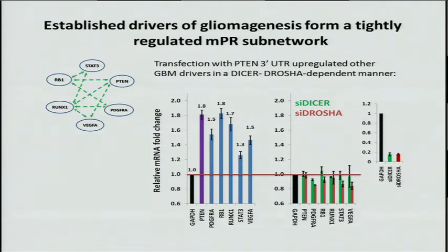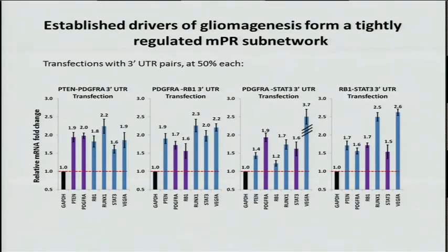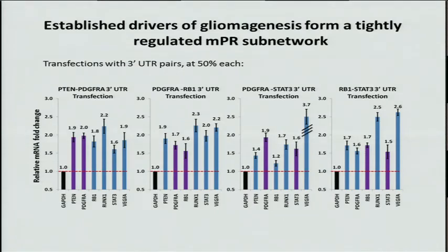Moreover, the regulation is combinatorial, and transfecting with pairs of UTRs instead of a single UTR — even at the same quantity — increased the response dramatically. We went from a 0.5 to about a two-fold change.